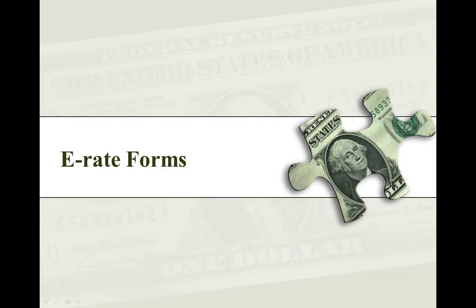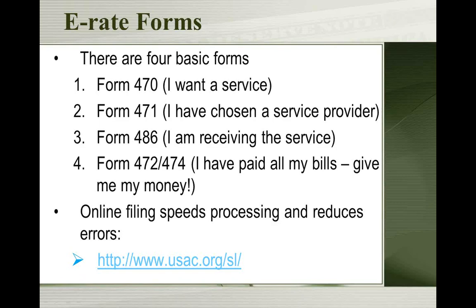Next, I'm going to talk about the actual forms you submit — some background information about them, what they're about, how they work, things you need to plan for ahead of time. There are four basic forms in the E-Rate process. The first three you always submit every year. The fourth depends on how you're going to get your money. For Form 470, you're putting out notice that you want to receive a service from a company and eventually get an E-Rate discount on it.